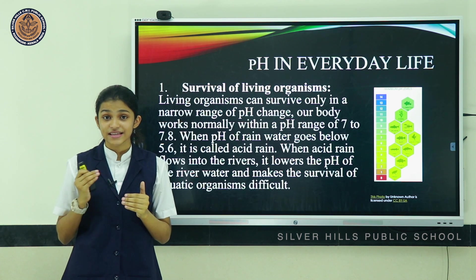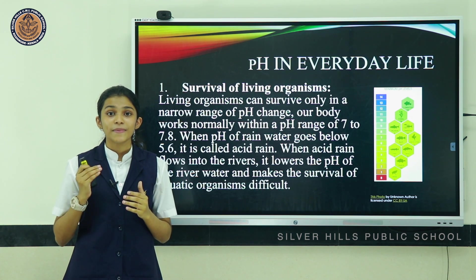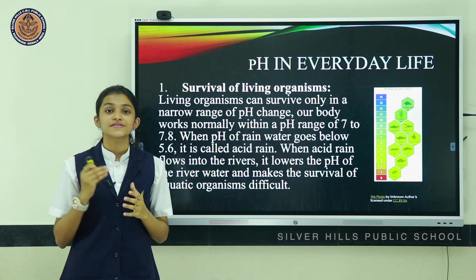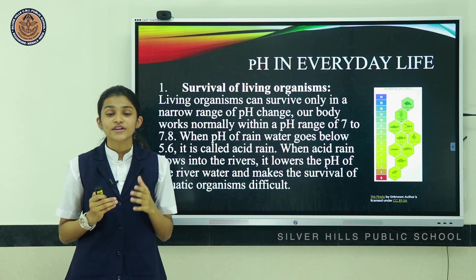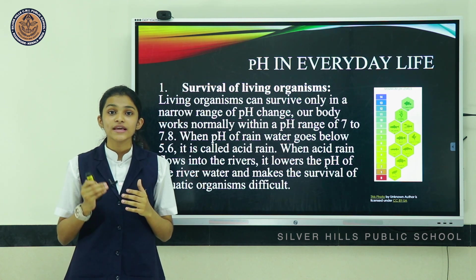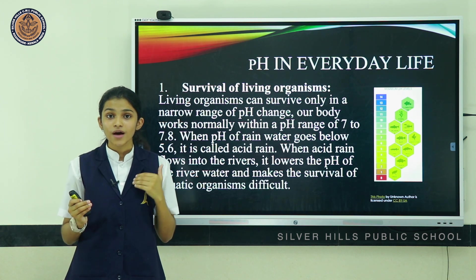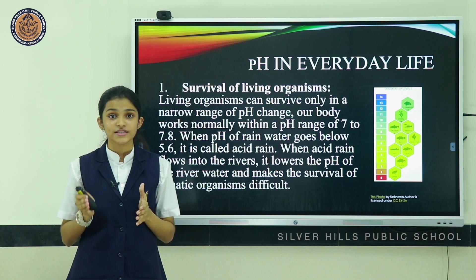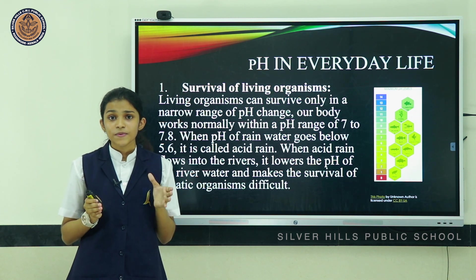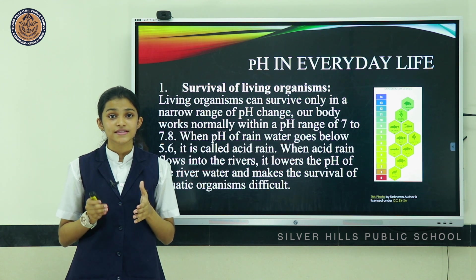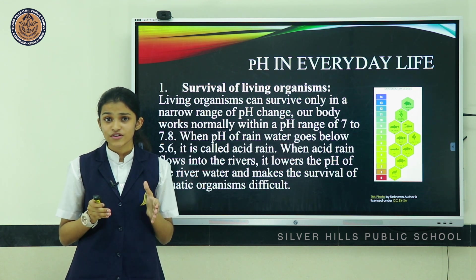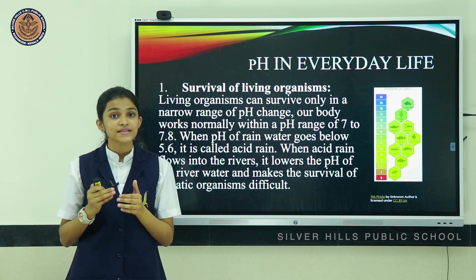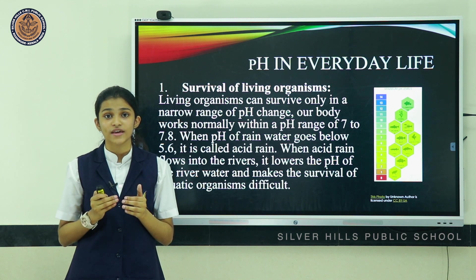Let's look at the significance of pH in everyday life. The first example is the survival of living organisms — living organisms can survive only in a narrow range of pH. Our body normally functions within the pH range of 7 to 7.8. If the pH of rainwater goes below 5.6, it is termed acid rain. When acid rain flows into rivers, it lowers the pH and makes survival of aquatic organisms difficult.